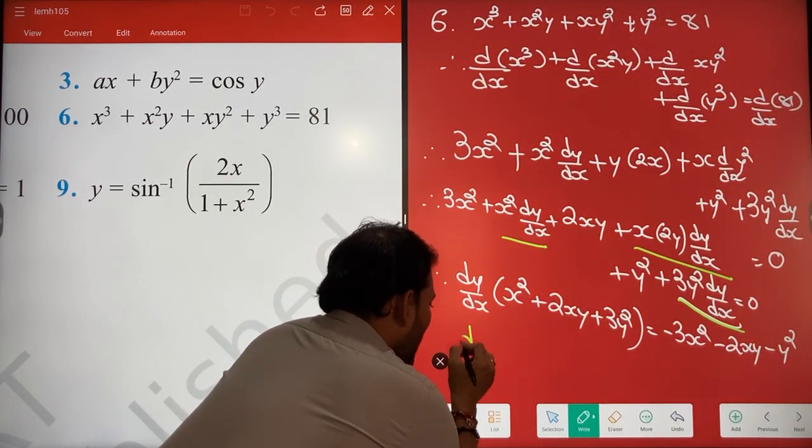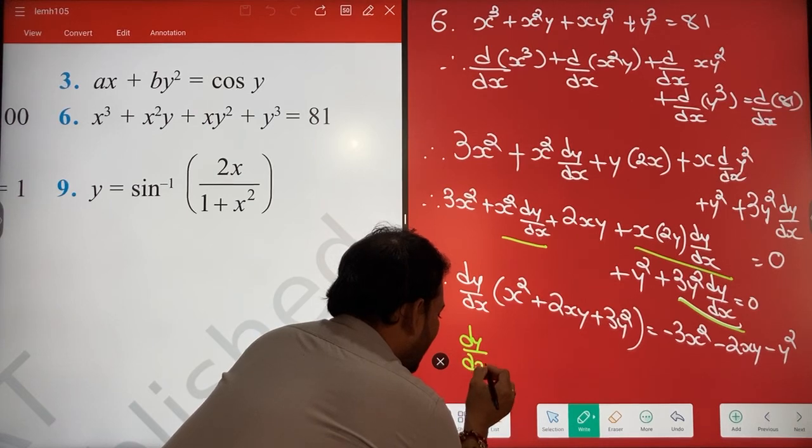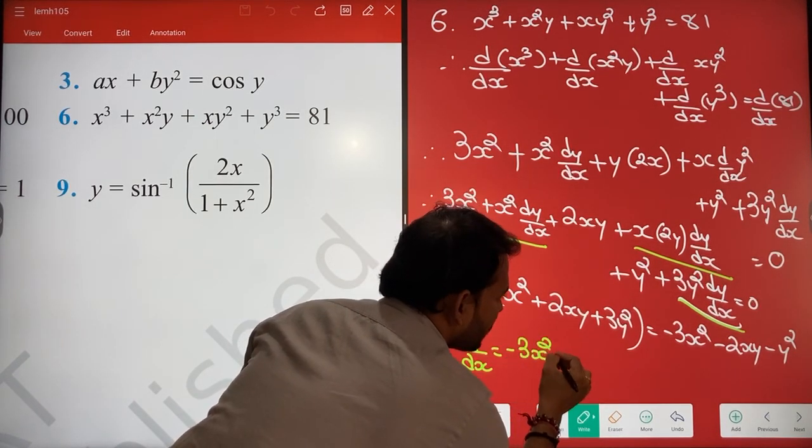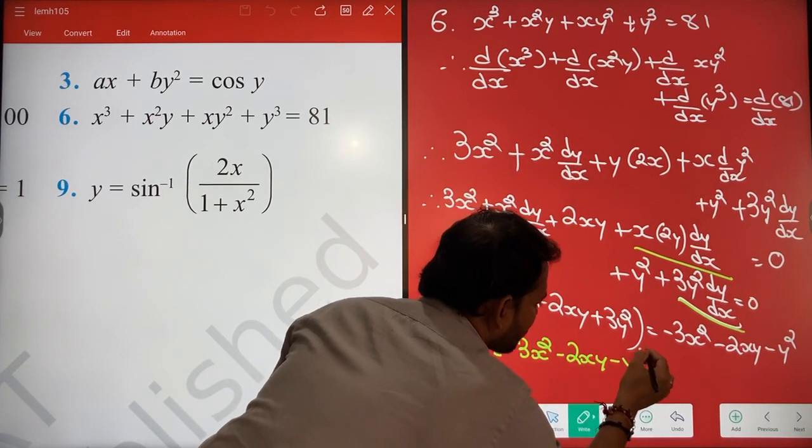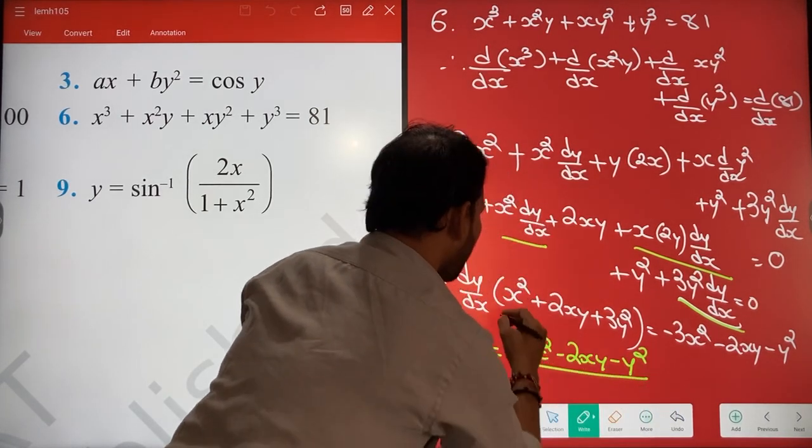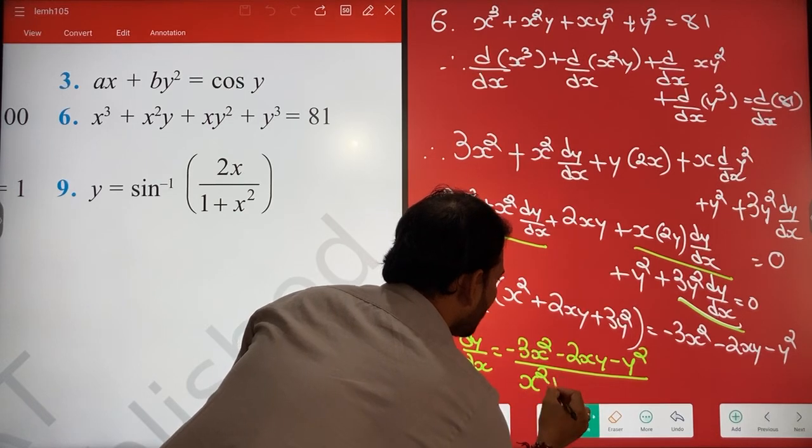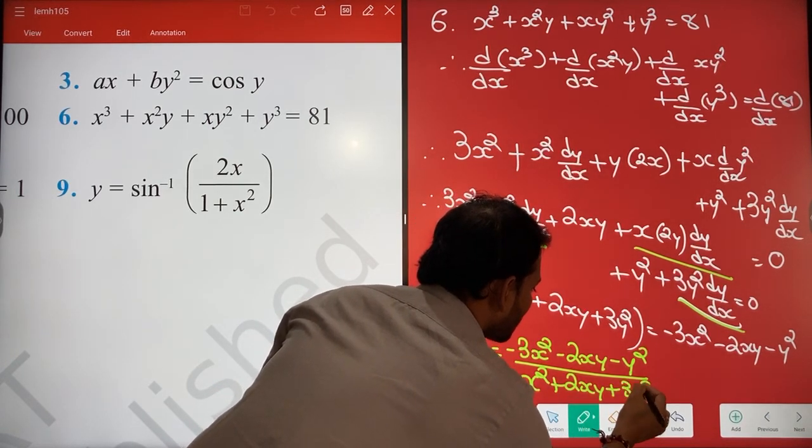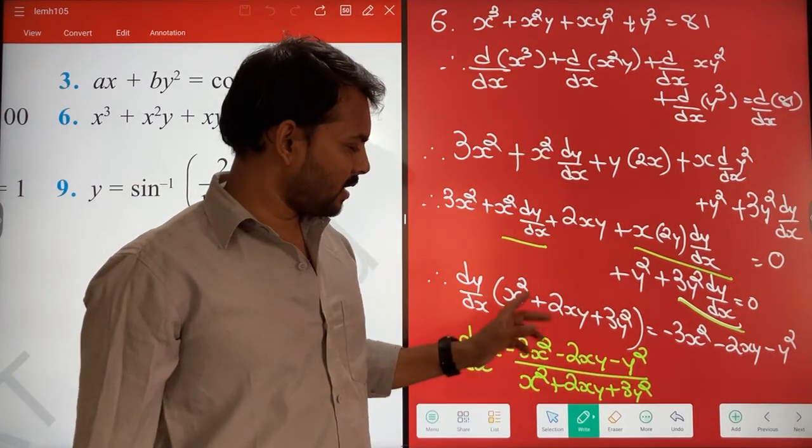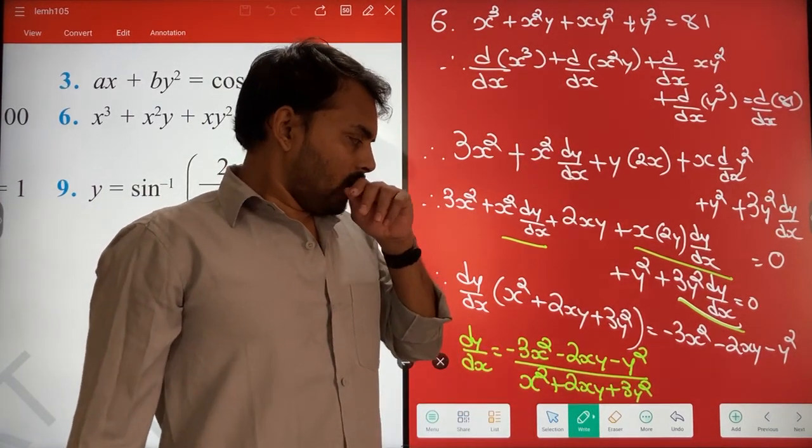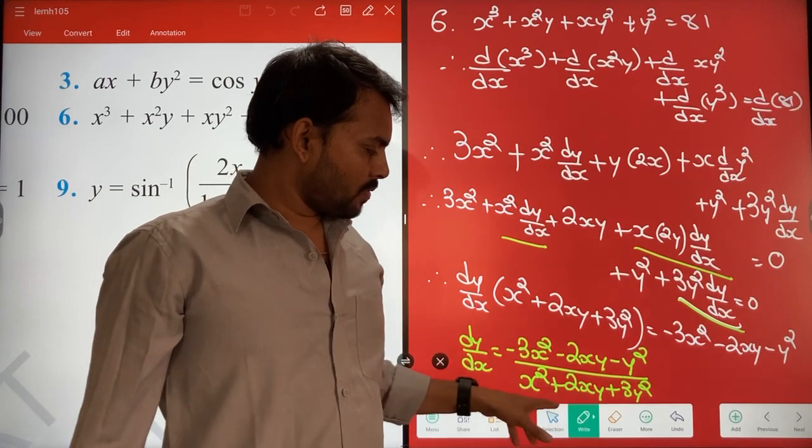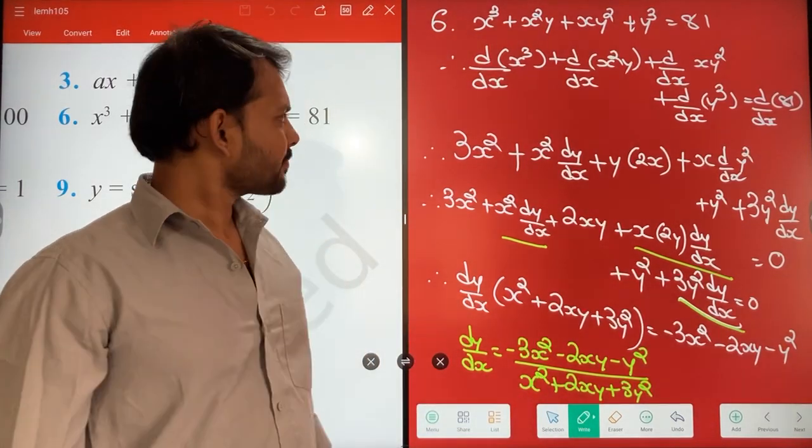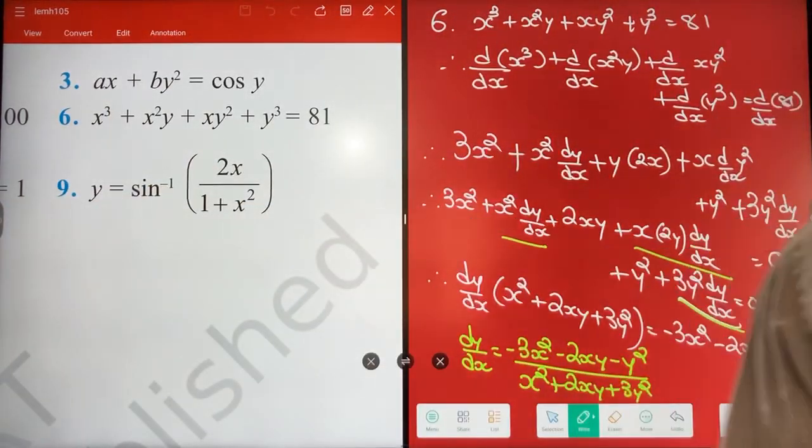So answer is, dy by dx that is equals to minus 3X2 minus 2XY minus Y square whole divided by X2 plus 2XY plus 3Y square. Isko ulta bhi likh sakte ho, 3Y square plus 2XY plus X2 upar jaise karna ho to, otherwise to chalega. Done? Yes. Thank you.